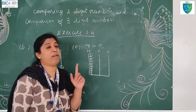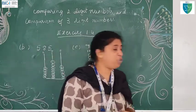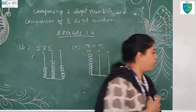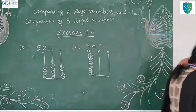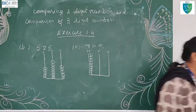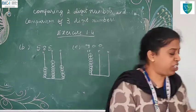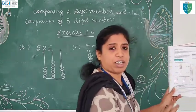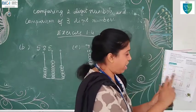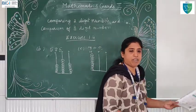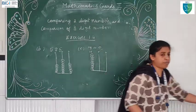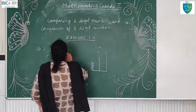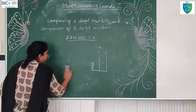Understood? The other three problems should be done by you. Now count the beads and write the number — you have to count yourself and write. Now write the expanded form.